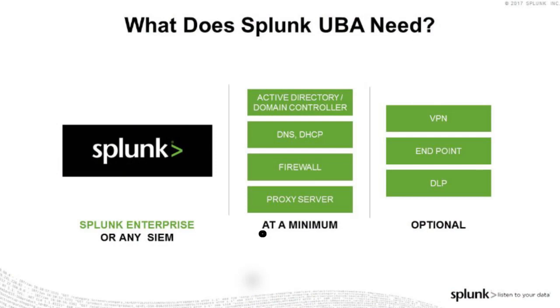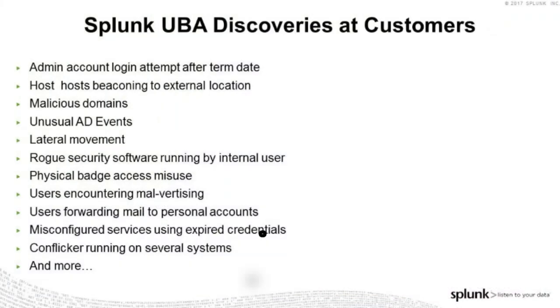What do you need for Splunk UBA? You need Splunk Enterprise or any SIEM, and at a minimum: Active Directory, DNS, DHCP, firewall, and proxy servers. Endpoint data is listed as optional, but I'd move it to mandatory — my most successful customers are collecting their endpoint data, and the very best indicators of compromise come from there. Also optional: VPN or DLP. These are some of the things our customers have discovered using Splunk UBA.